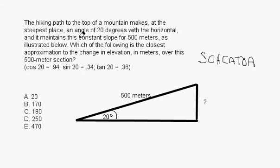So there's a path, and the angle is 20 degrees, and it maintains this slope for 500 meters, as indicated here. Which of the following is the closest approximation to the change in elevation, which is what we want, which is this? How high does it get over this 500-meter section?